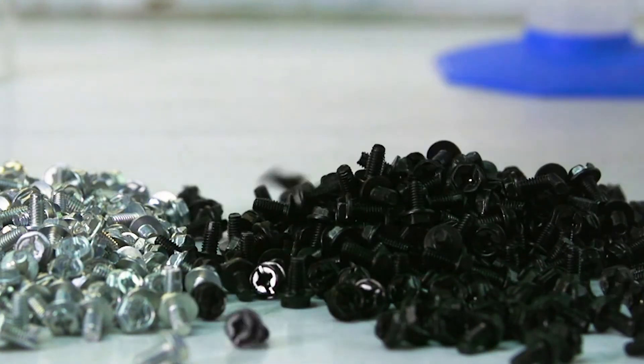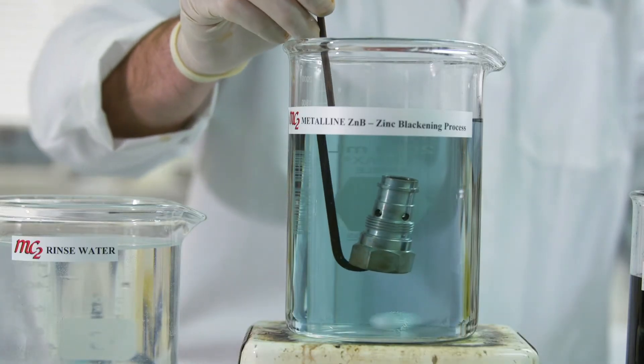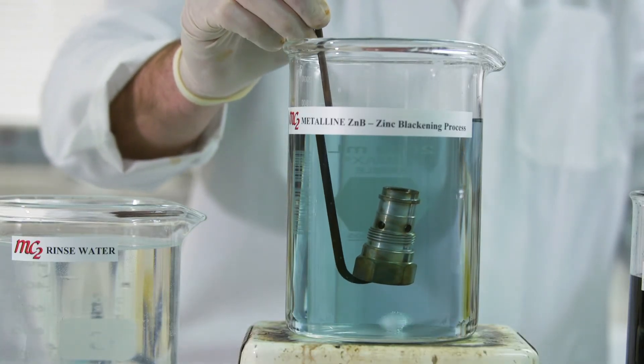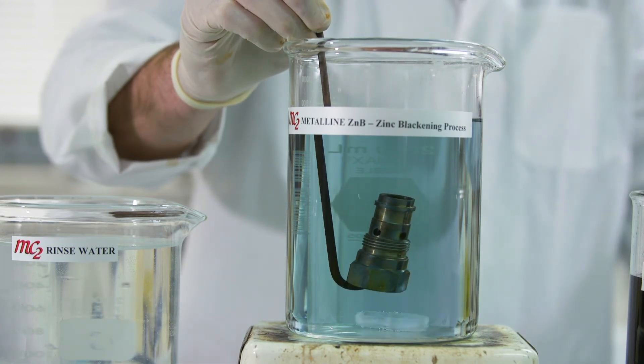With proper maintenance, thorough rinsing, and adequate drying, the MetaLine ZMB Trivalent Black Chromate Process can achieve 120 hours to 5% white corrosion based on the ASTM B117 specification.